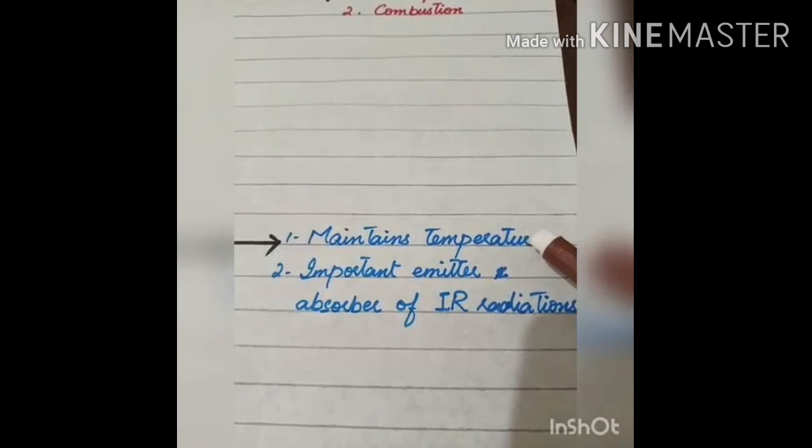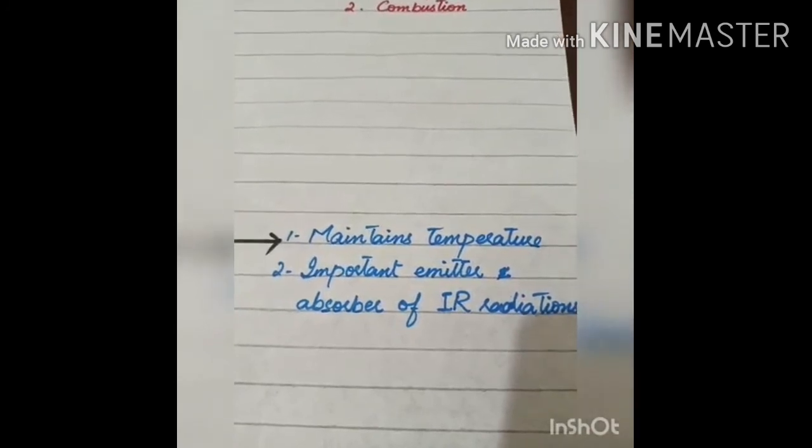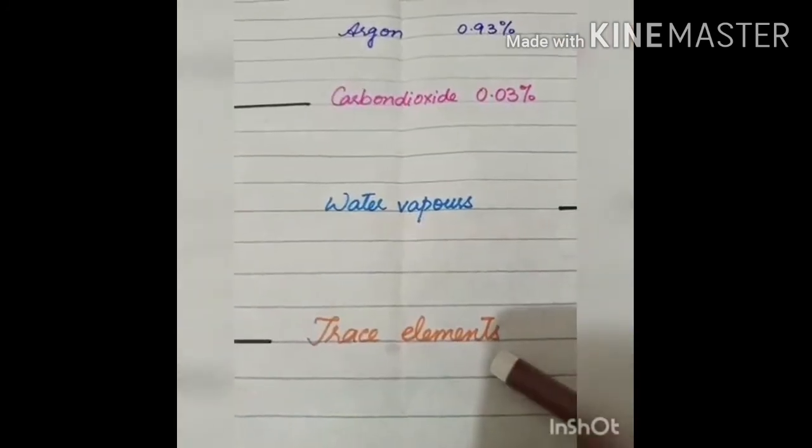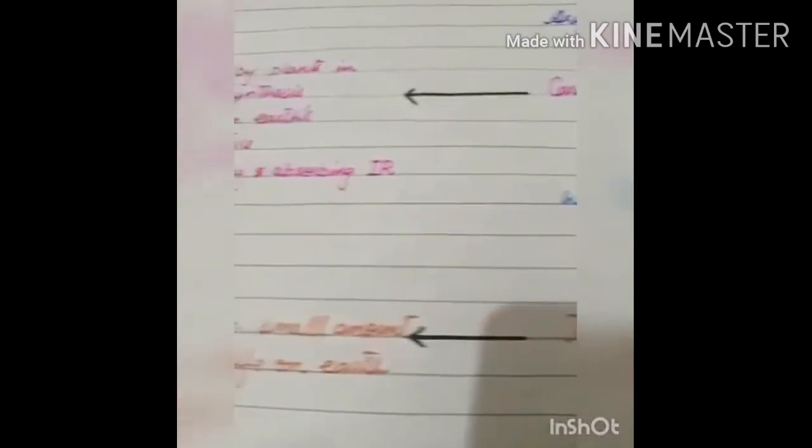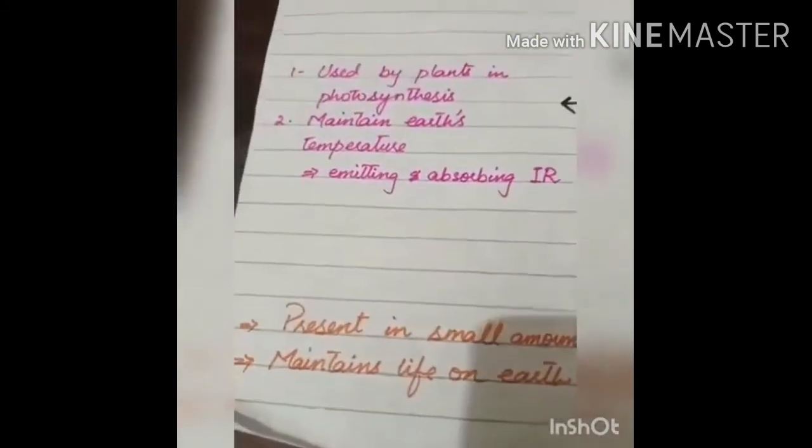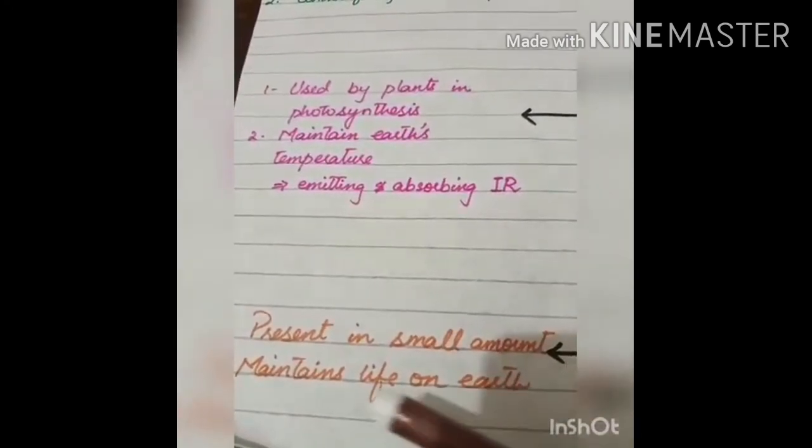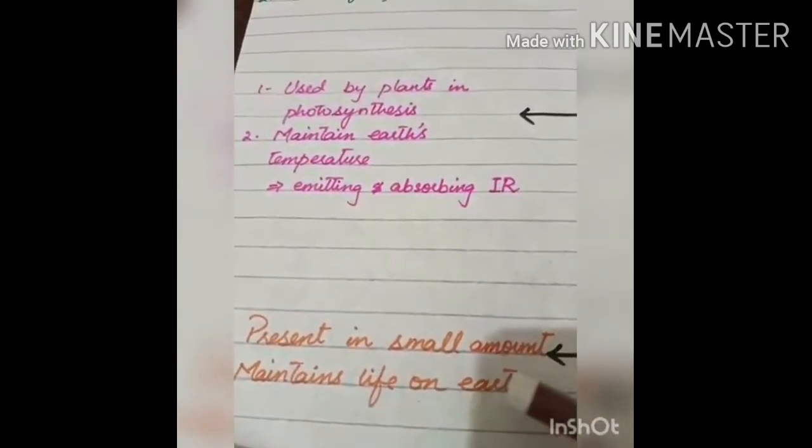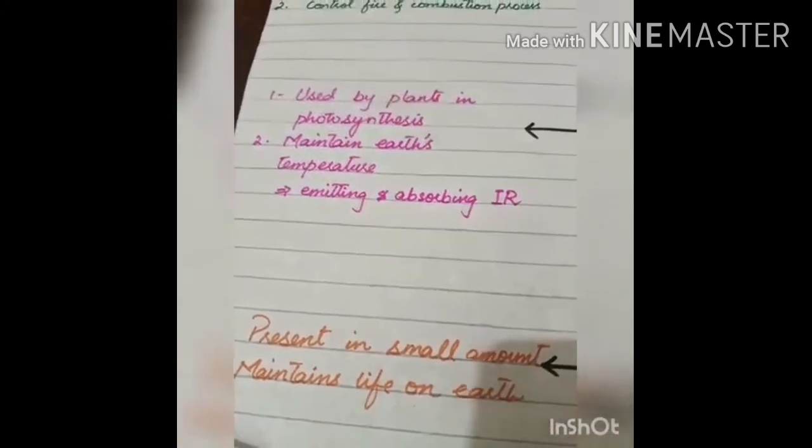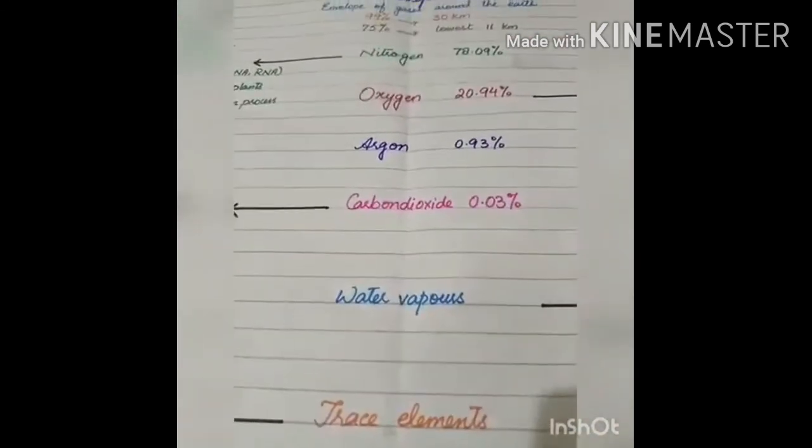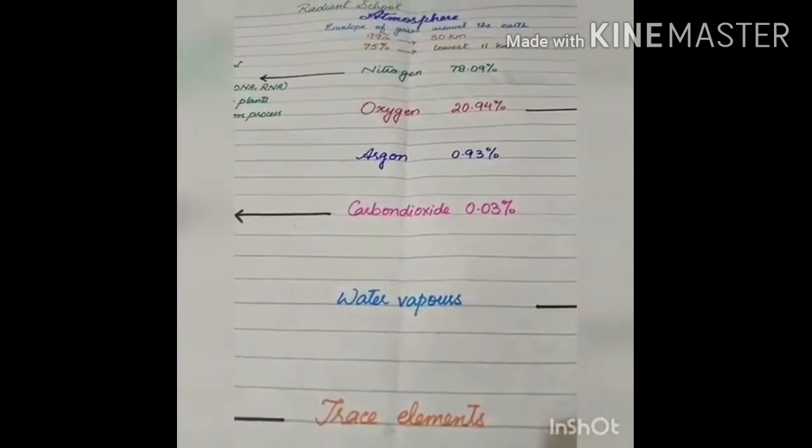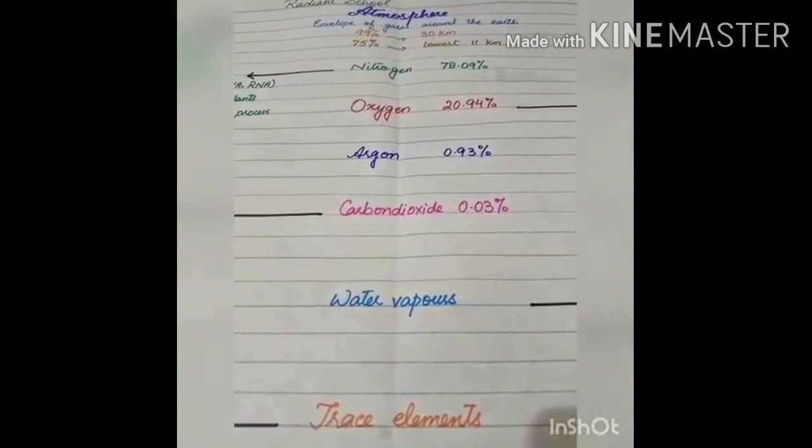Some trace elements are also present in the atmosphere. Although these are present in very small amount, but they help to maintain life on earth. So these are the different components of the atmosphere, which are very important to maintain the life on earth.